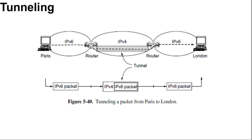The path through the IP version 4 internet can be seen as a big tunnel, extending from one multi-protocol router to the other, and the IP version 6 packet just travels from one end of the tunnel to the other. It does not have to worry about dealing with IP version 4, and neither do the hosts in Paris or London. Only the multi-protocol routers have to understand both IP version 4 and IP version 6 packets, and the entire trip from one multi-protocol router to the other is like a hop over a single link.